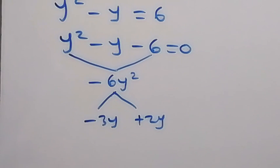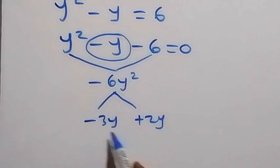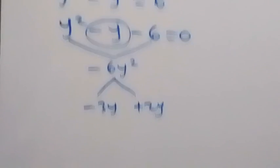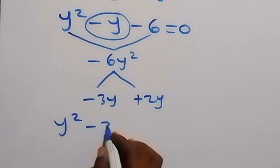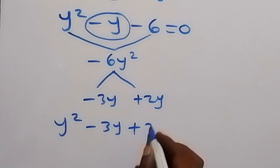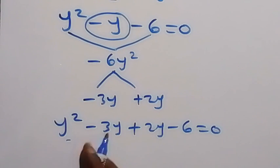So therefore, we can replace this minus y now with minus 3y plus 2y. So this will now give us y square minus 3y plus 2y minus 6 equals to 0.